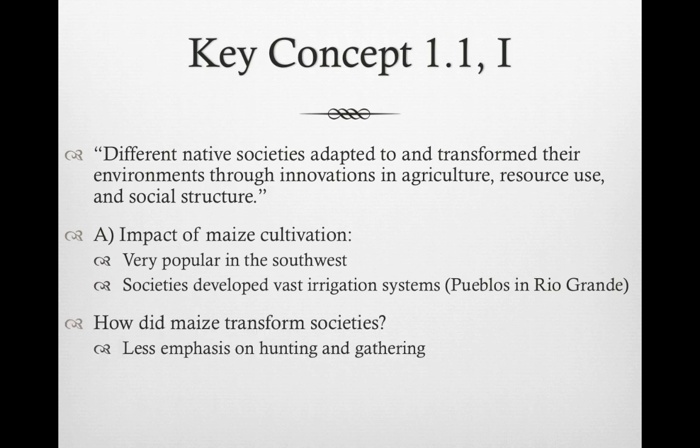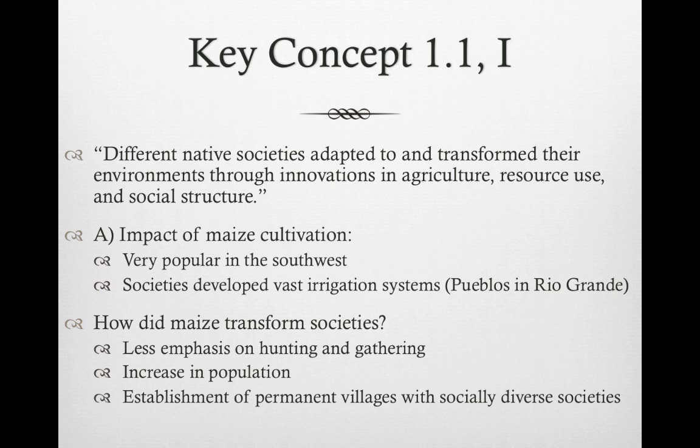How exactly does maize transform societies? There's less emphasis on hunting and gathering, and we see an increase in population — not only for Europeans when maize makes its way to Europe, but also for Native Americans. We see the establishment of permanent villages with socially diverse societies, because people are growing maize and have a constant food source. An example of a socially diverse city is Tenochtitlan — present-day Mexico City — with 250,000 people at its height and many different social classes.